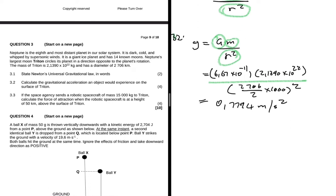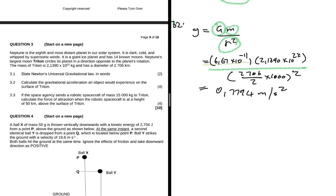We can move forward and go to 3.3. Question 3.3 says if the space agency sends a robotic spacecraft of mass 15,000 kilograms to Triton, calculate the force of attraction when the robotic spacecraft is at a height of 50 kilometers above the surface of Triton. So we know fully well that F, like we have already said, is equals to G m1 m2 divided by r squared.